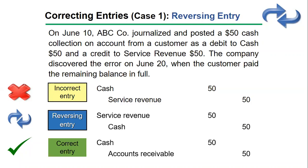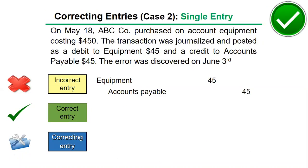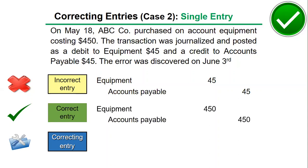Now for another example. On May 18, ABC company purchased on account equipment costing $450. The transaction was journalized and posted as a debit to equipment $45 and a credit to accounts payable $45. The error was discovered on June 3rd. As you can see, the accountant forgot the zero, so the incorrect entry has equipment $45 and accounts payable $45, when it should be equipment debit $450 and accounts payable credit $450.